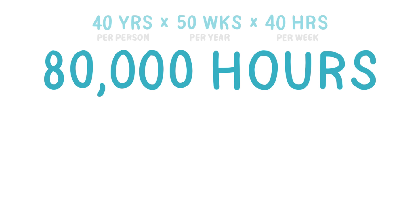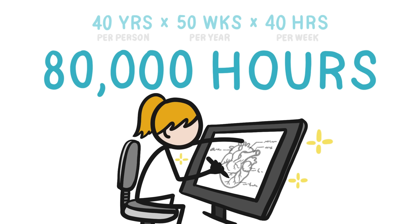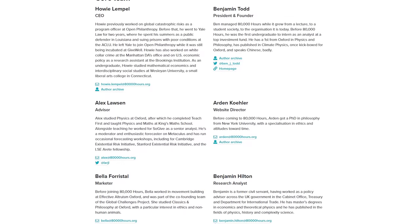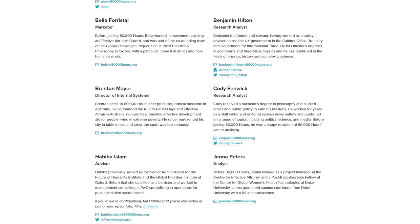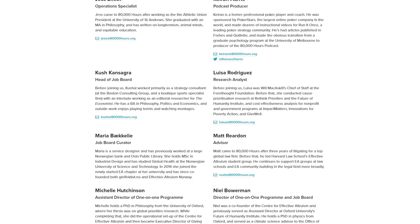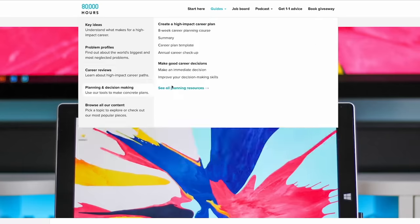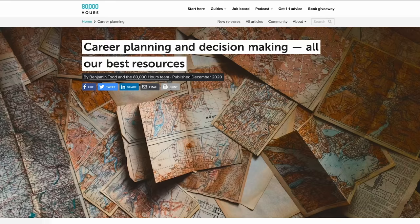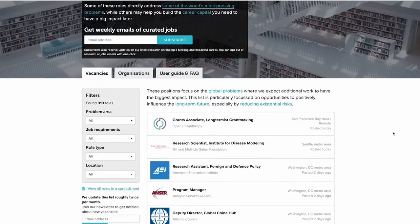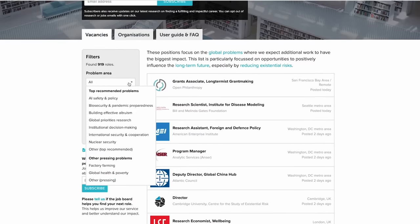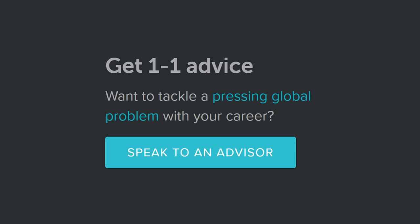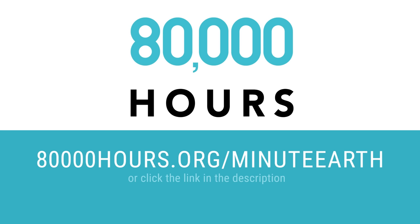80,000 Hours is a non-profit with a simple goal. They want to help you use your career to make a positive impact on the world, and they've spent the last 10 years working with Oxford University researchers to figure out the best way to help you make it happen. 80,000 Hours provides tons of resources like a career planning course and a continuously updated and rigorously curated job board. They will even set you up with one-on-one calls with their team of career advisors, and they do it all for free. So head over to 80,000hours.org slash MinuteEarth to start planning your career.